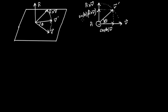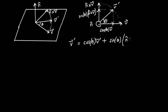This vector is in the same direction as n-hat cross V — it's just a scaled-down version of that vector, with scalar factor sine theta in this case. So our conclusion is that V prime is the sum of cosine theta times V and sine theta times n-hat cross V. And that is really the main formula of this video.